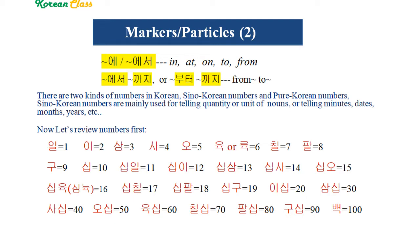Today, before learning new markers, let's review Sino-Korean numbers we have learned in Day 7. I hope you remember there are two kinds of numbers in Korean: Sino-Korean numbers and Pure Korean numbers. Sino-Korean numbers are mainly used for telling quantity or unit of nouns, or telling minutes, dates, months, years, and more.